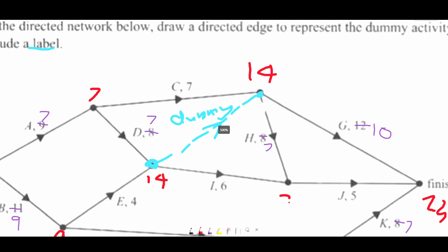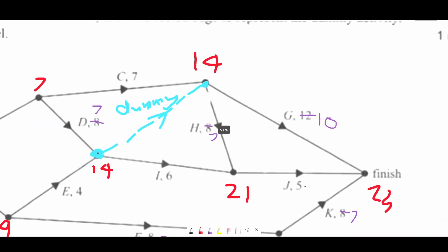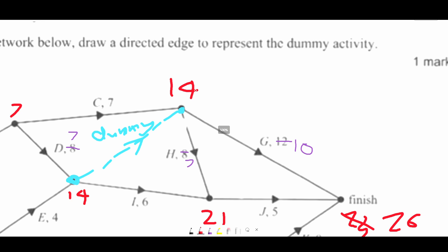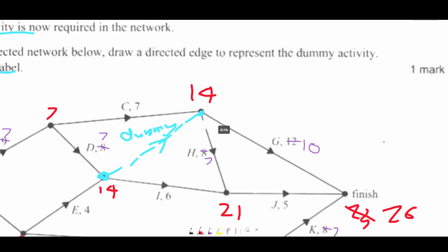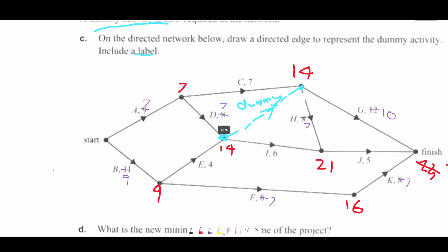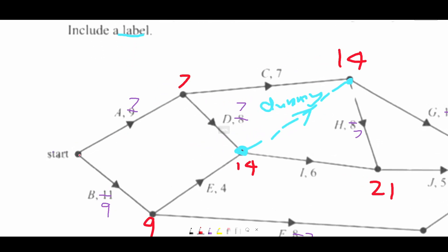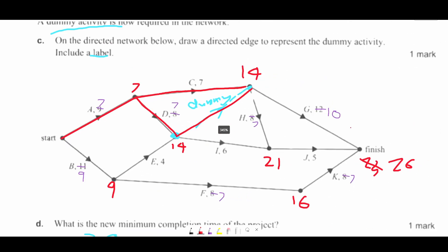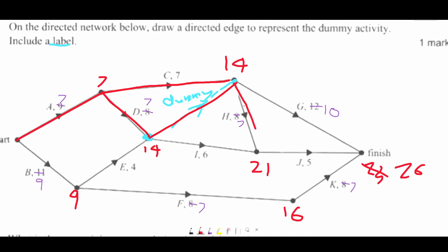14 plus seven is 21. 21 plus five is 26. So 26 is my higher number. 14 plus 10 is 24. So our critical path, we actually have more than one critical path here. So we're going to go up here. Seven. And then down here. And then we actually have these two pathways. And then we go down here. And here.